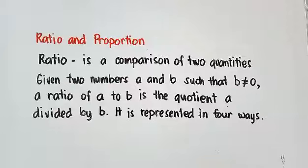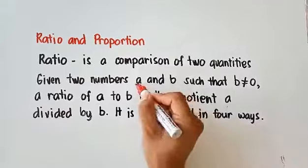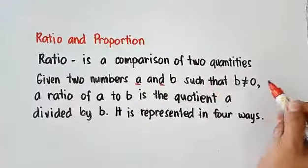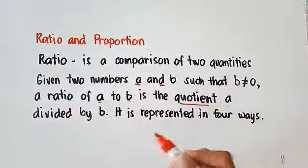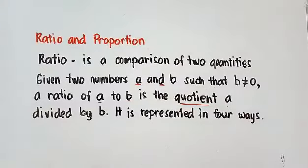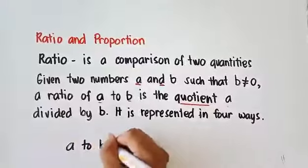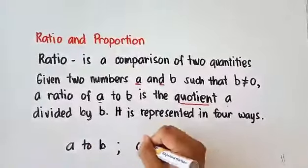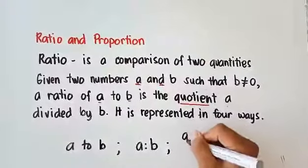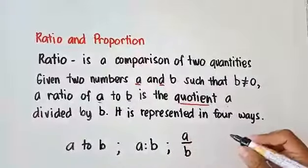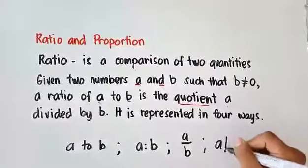Ratio and proportion. Ratio is the comparison of two quantities. Given two numbers A and B such that B is not equal to zero, the ratio of A to B is the quotient of A divided by B. It is represented in four ways: A to B, A is to B, A over B, and A slash B.